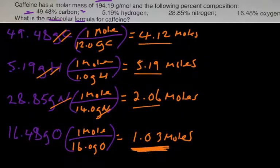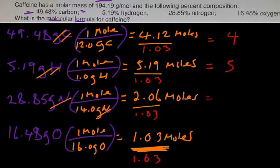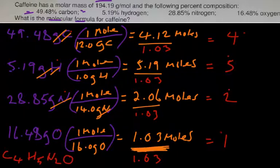Dividing everything by 1.03: carbon will be approximately 4, hydrogen will be approximately 5, nitrogen will be 2, and oxygen will be 1. So we have an empirical formula of C4H5N2O — four carbons because of the 4, H5 because there are 5 hydrogens, N2 for two nitrogens, and O because there's only one oxygen in the ratio.